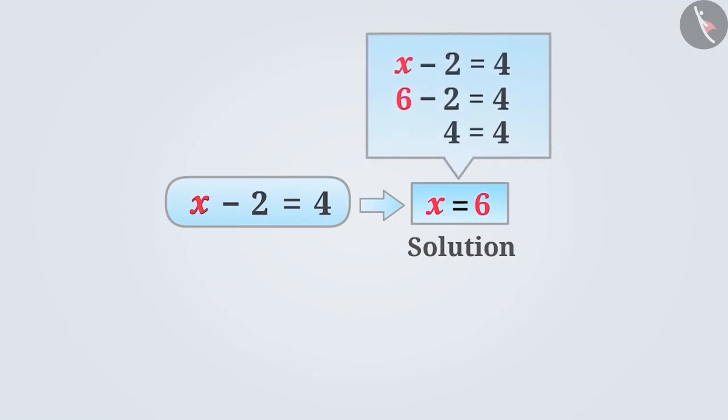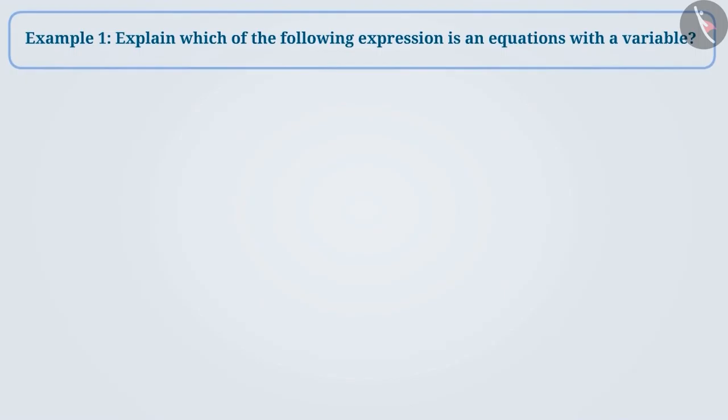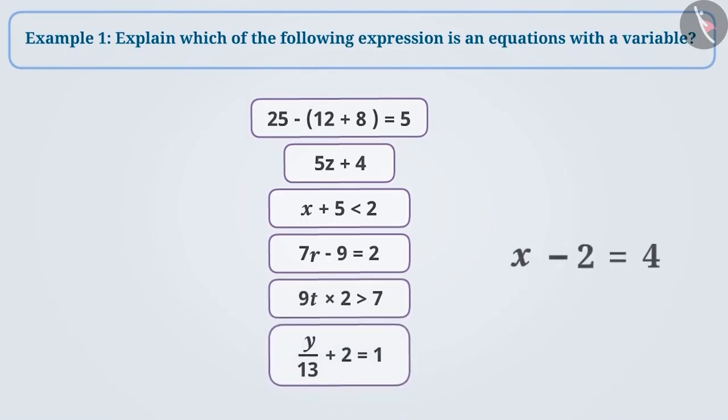With some examples, we will understand equations more thoroughly. Example 1: Explain which of the following expression is an equation with a variable. The equation must have one or more variables and the left-hand side must be equal to the right-hand side.